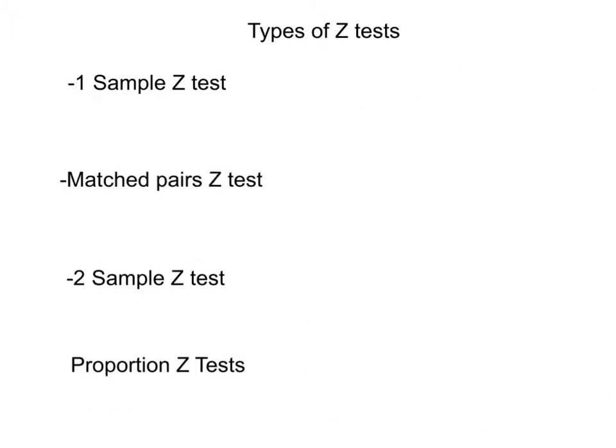Okay, so we're going to go over the types of z-tests. And so the first is a one-sample z-test. Let's say we're doing test scores. You want to compare a test score of a school to the national average. That's when you would use a one-sample z-test.